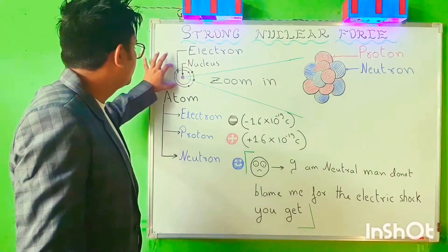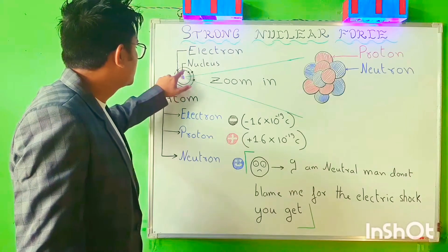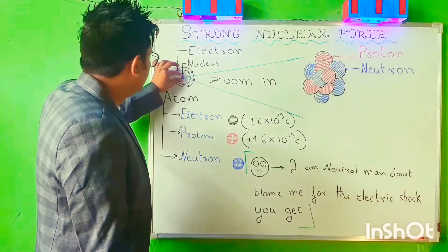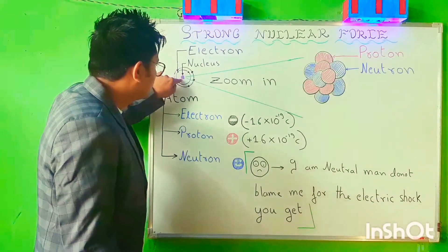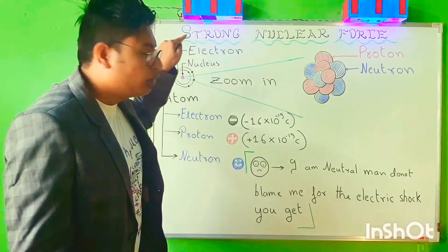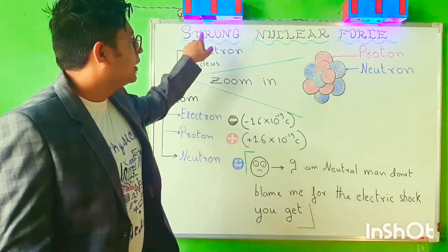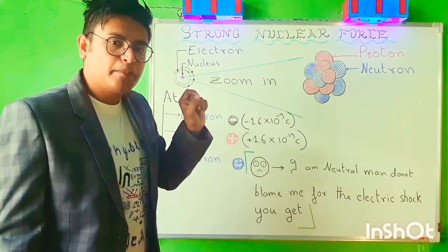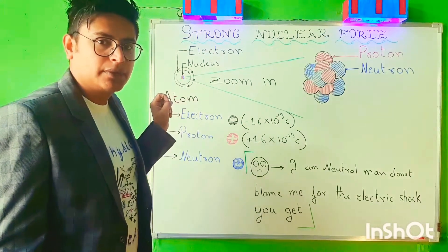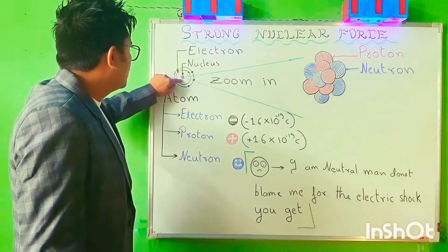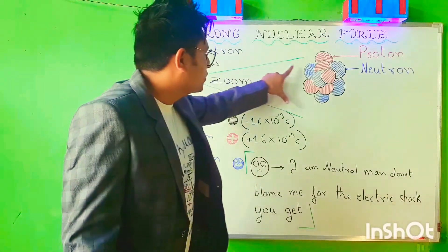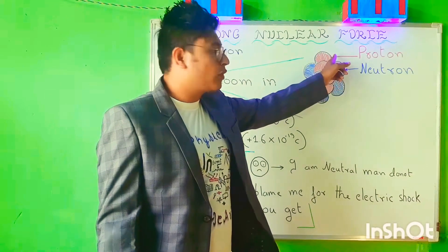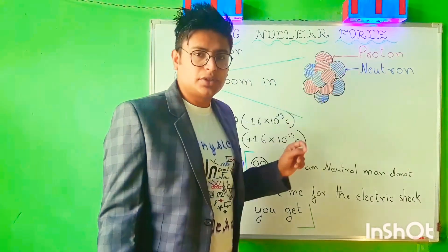Let us zoom in into this picture. We have a nucleus at the center and an electron orbiting the nucleus. And when we zoom in on this particular nucleus — since we are going to discuss the nucleus only, as the topic is strong nuclear force — we see that in the nucleus I have some protons and some neutrons.